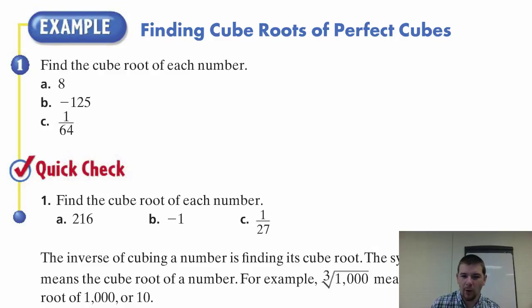Right away, maybe start with one. One times one times one is just one, so that's not going to be useful for us in most situations. Then move on to two. Two times two times two, sure enough, that's eight. So the cube root of eight is two, and we can also say eight is a perfect cube.